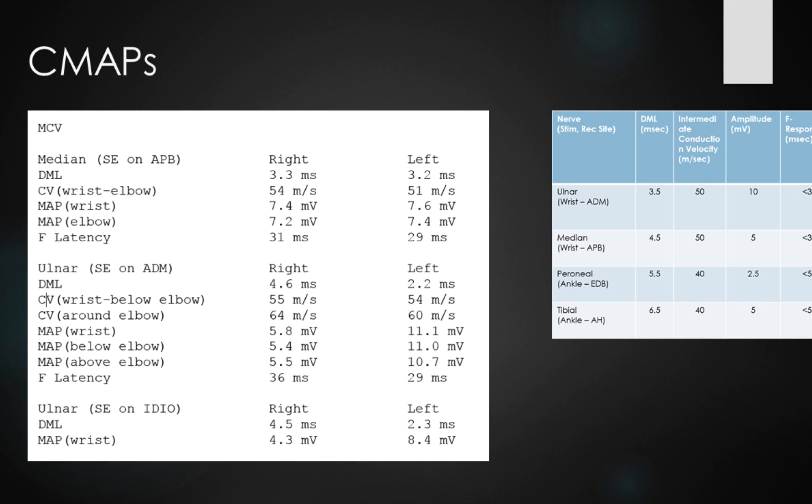We'll then have a look at the ulnar responses. Well, the distal motor latency for the right ulnar response to the ADM is delayed. It's 4.6 milliseconds. That should definitely be less than 3.5 milliseconds. And if you look at the contralateral side, it's only 2.2 milliseconds. So there's significant prolongation of the time it takes the stimulus to travel across from the wrist and stimulate the ADM muscle. So there's definitely some distal slowing there.